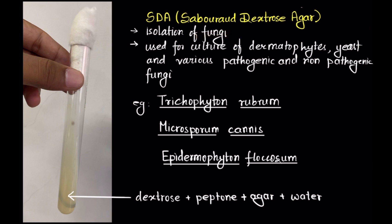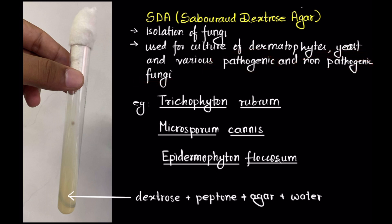Finally, there is SDA, or Sabouraud dextrose agar. It is used for isolation of fungi, including dermatophytes, yeast, and various pathogenic and non-pathogenic fungi such as Trichophyton rubrum, Microsporum canis, and Epidermophyton floccosum.